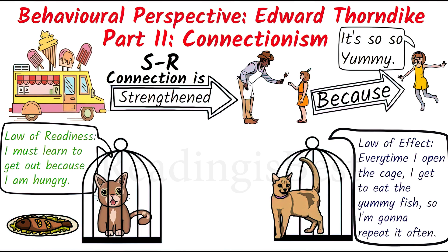This is based on his law of effect. The cat learned which response brings a reward, and the connection between that stimulus and response was strengthened, whereas the connection between an unrewarding stimulus and response was weakened.